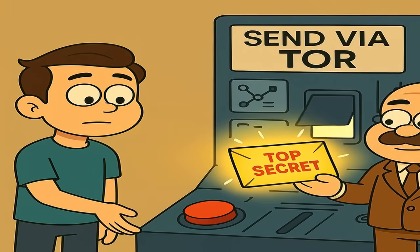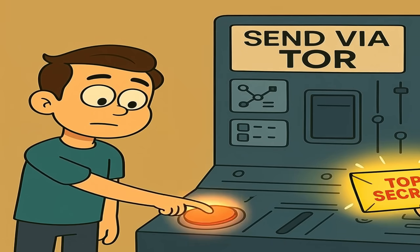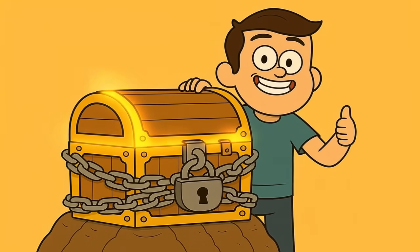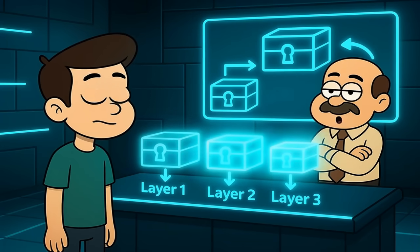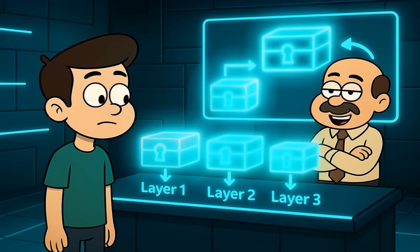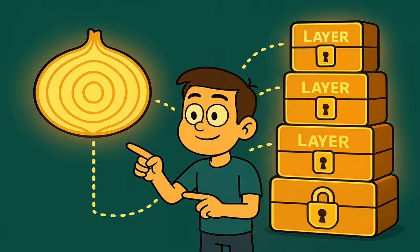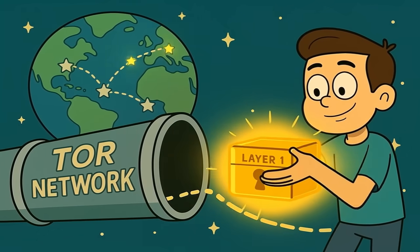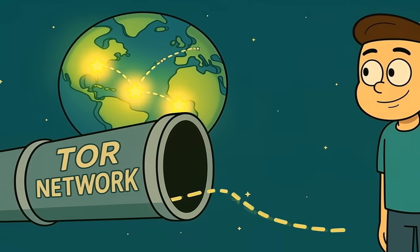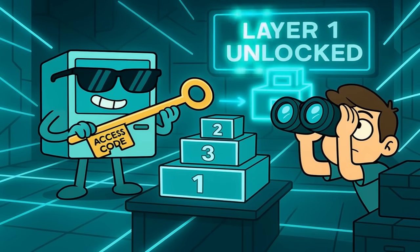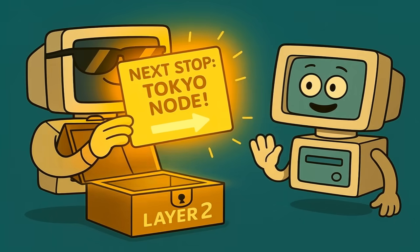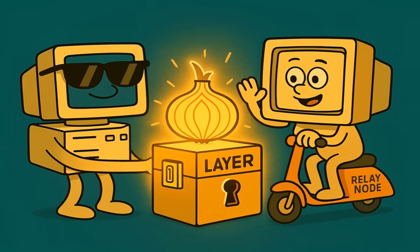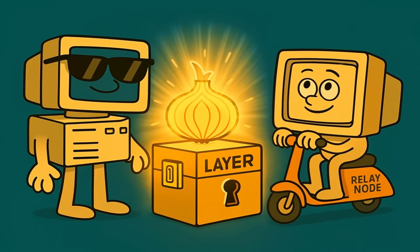When you want to visit a website using Tor, it's like you're sending a secret message. First, you write your message down and put it in a lockbox. Then you put that lockbox inside another lockbox, and then another, and another. You create multiple layers, just like an onion. Then you send this multi-layered box to a random computer somewhere in the world. That computer has the key to unlock only the outermost box, and inside it finds instructions to send the remaining boxes to another random computer.